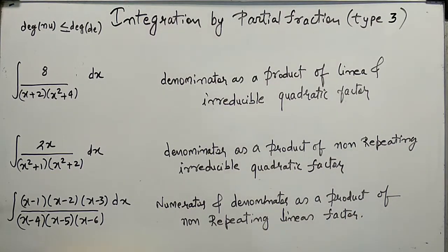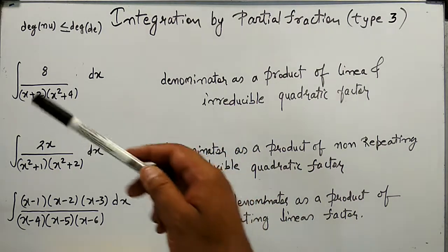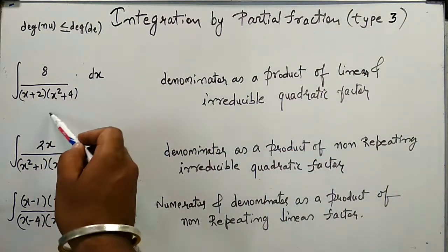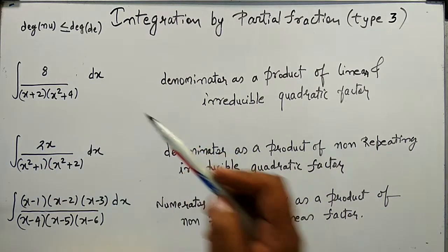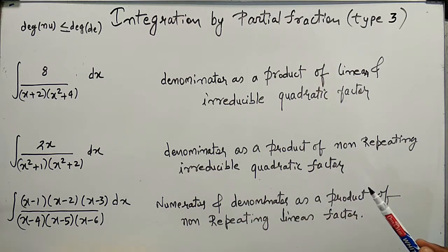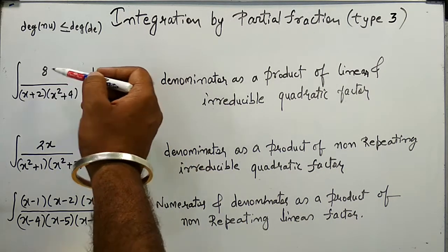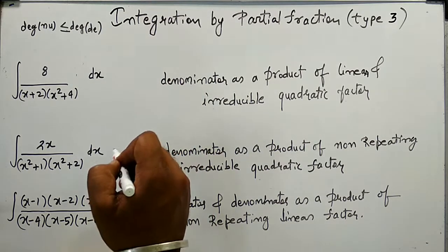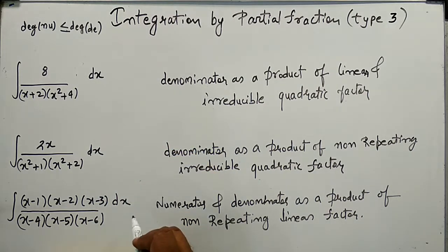Welcome to the third tutorial video on integration by partial fractions. In this video we will understand the method for evaluating integrals of three types. In the first type, the denominator has a linear factor and an irreducible quadratic factor. In the second type, the denominator has two non-repeating irreducible quadratic factors. In the third type, the numerator and denominator are a product of non-repeating linear factors with equal degree.